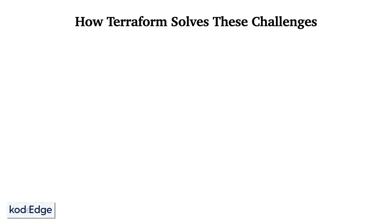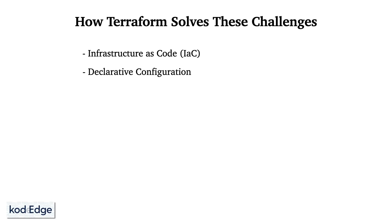So how does Terraform solve these challenges? First, using infrastructure as code — Terraform allows infrastructure to be defined and managed as code, which enables automation, versioning, and collaboration. Next is declarative configuration — Terraform's declarative syntax simplifies infrastructure management by describing the desired state of infrastructure rather than specifying step-by-step procedures. Next is multi-cloud support — Terraform supports provisioning resources across various cloud providers, allowing users to avoid vendor lock-in and promoting portability.